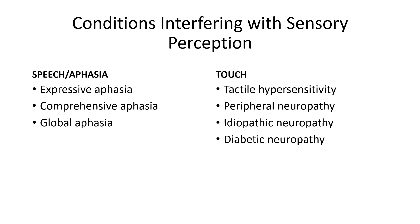Speech alterations or aphasia is another condition that interferes with sensory perception. Communication involves cerebration or thinking, cognition, hearing, speech production, and motor coordination. The process of speech is controlled by cranial nerves 5, 10, 11, and 12. There are various types of aphasia.